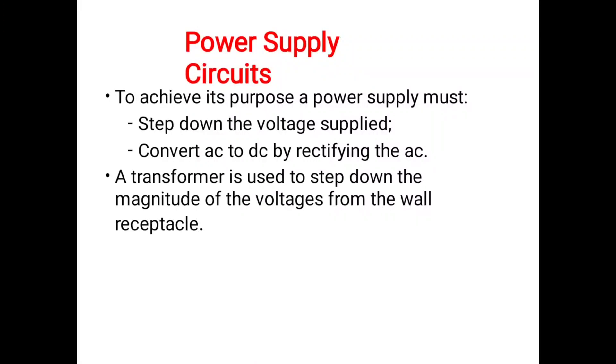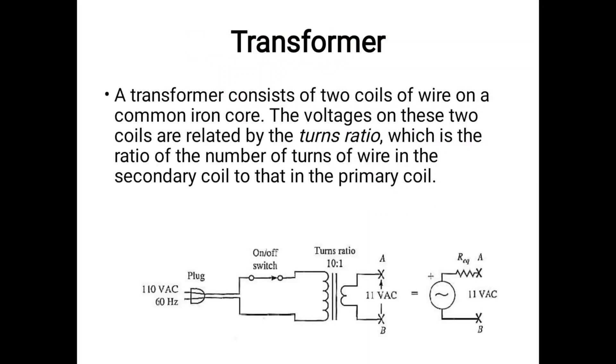A transformer consists of two coils of wire on a common iron core. The voltages on these two coils are related by the turns ratio, which is the ratio of the number of turns of wire in the secondary coil to that in the primary coil.